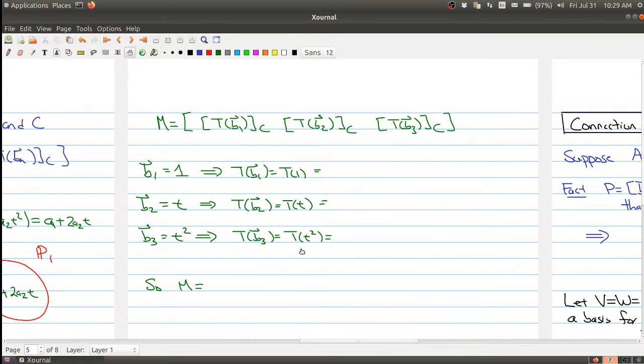And so I've started some of the work over here. So we're trying to find the matrix M relative to the basis B and C. So what we need to do is first figure out, start with all the basis elements of P2, stick them into our function. So we're going to stick our first basis element in, which is 1.